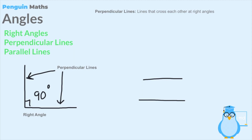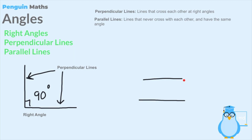Now imagine two lines that have no angle between them at all. If these two lines went on forever, they would never meet - they're exactly straight with one another. We call these parallel lines. In maths, two lines are parallel if they both have the same angles between them. Just as perpendicular lines are represented by a right angle symbol, we symbolize parallel lines by placing small arrows running through the pair, indicating they are parallel.